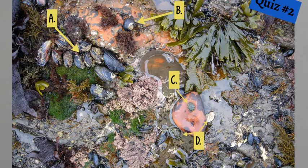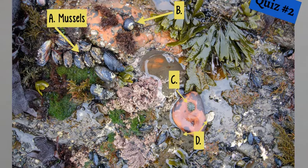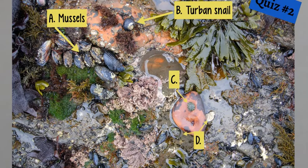Ready for another quiz? Can you tell me what A is? You got it — those are mussels. Let's look at B. Smooth, rounded top shell with only one point — it's gotta be a turban snail.